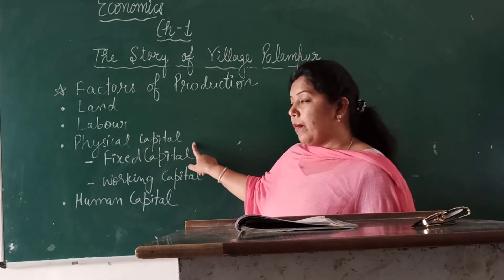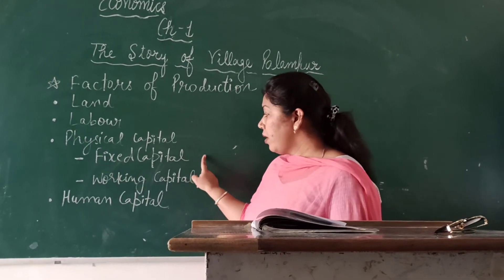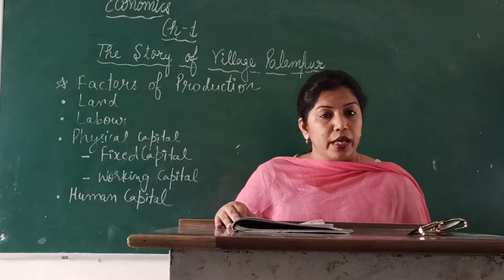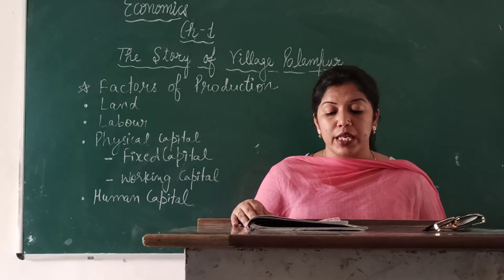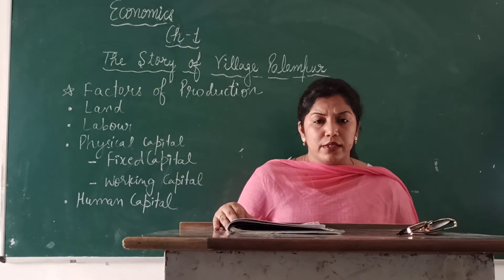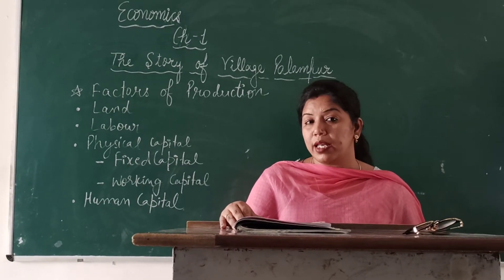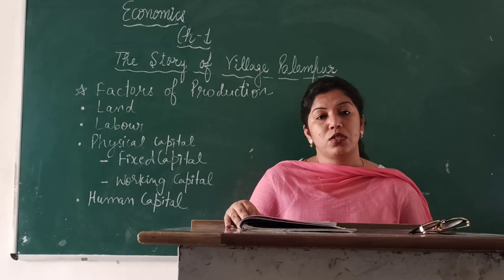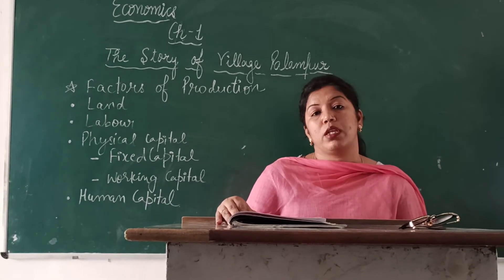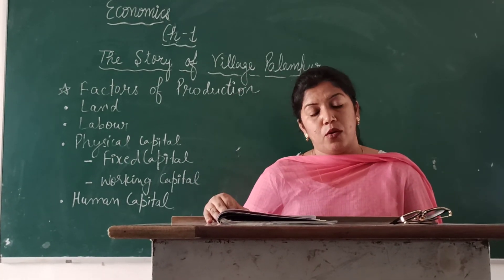The third requirement is physical capital, which we divide into two parts: fixed capital and working capital. Fixed capital includes tools, machines, and buildings. Farmers use simple tools for agriculture, and others use generators, turbines, and computers. These tools, machines, and buildings are used over a long term for production activities, which is why we call them fixed capital — resources used for long-term needs.